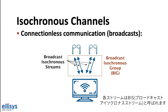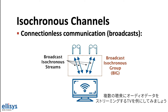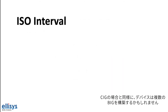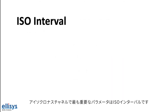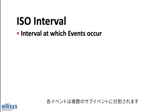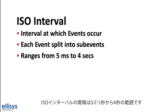Each stream is referred to as a broadcast isochronous stream or BIS. A group of BISs is referred to as a broadcast isochronous group or BIG. An example of this would be a TV streaming audio data to multiple sinks, such as different individuals wearing earbuds. Just as in the case of CIGs, a device may also create multiple BIGs. One important parameter in isochronous channels is the ISO interval, which defines the interval at which events occur. Each event is split into multiple sub-events, and the ISO interval ranges from 5 milliseconds to 4 seconds.